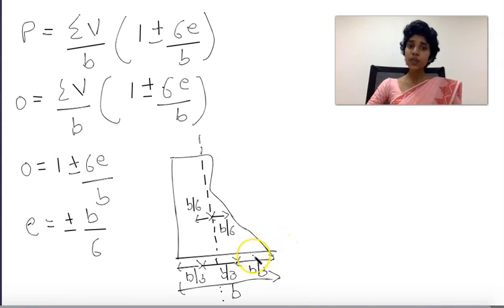Concrete is strong in compression but weak in tension. If tension develops, cracks form. When cracks appear, water enters and increases the compressive stress on the remaining section, which can lead to failure.